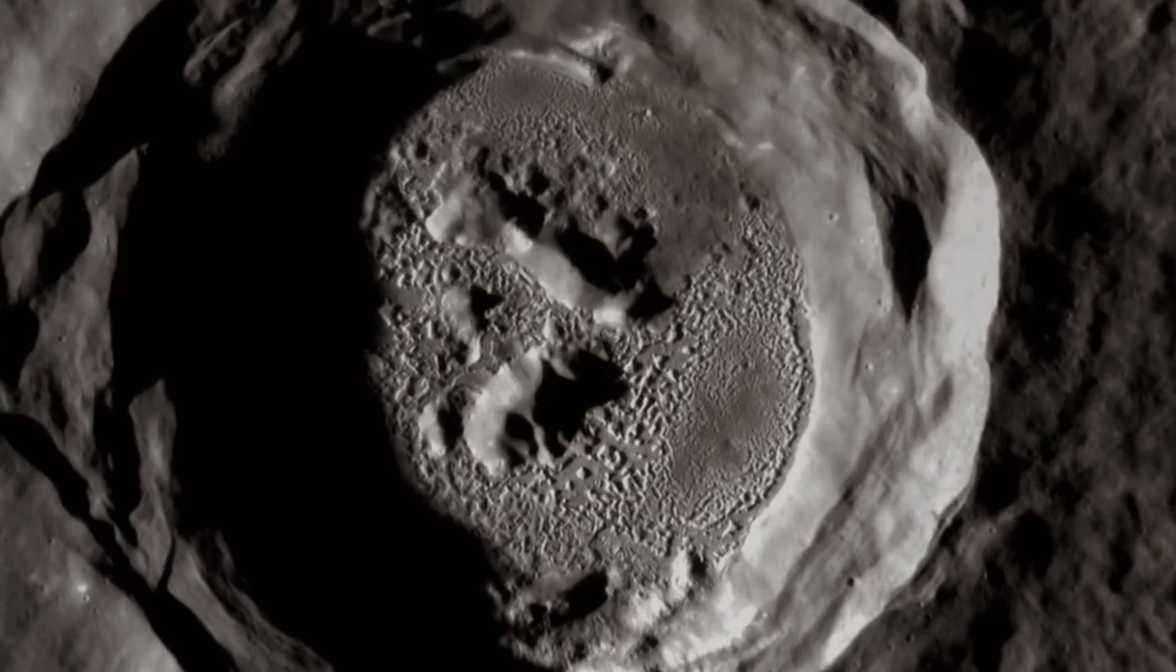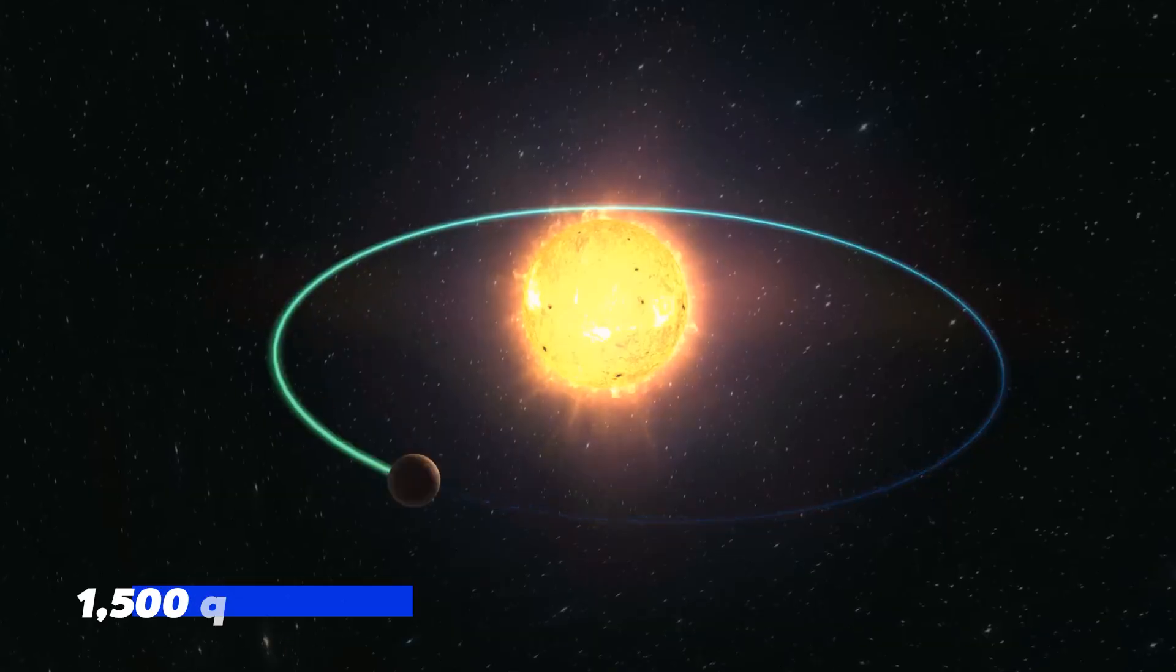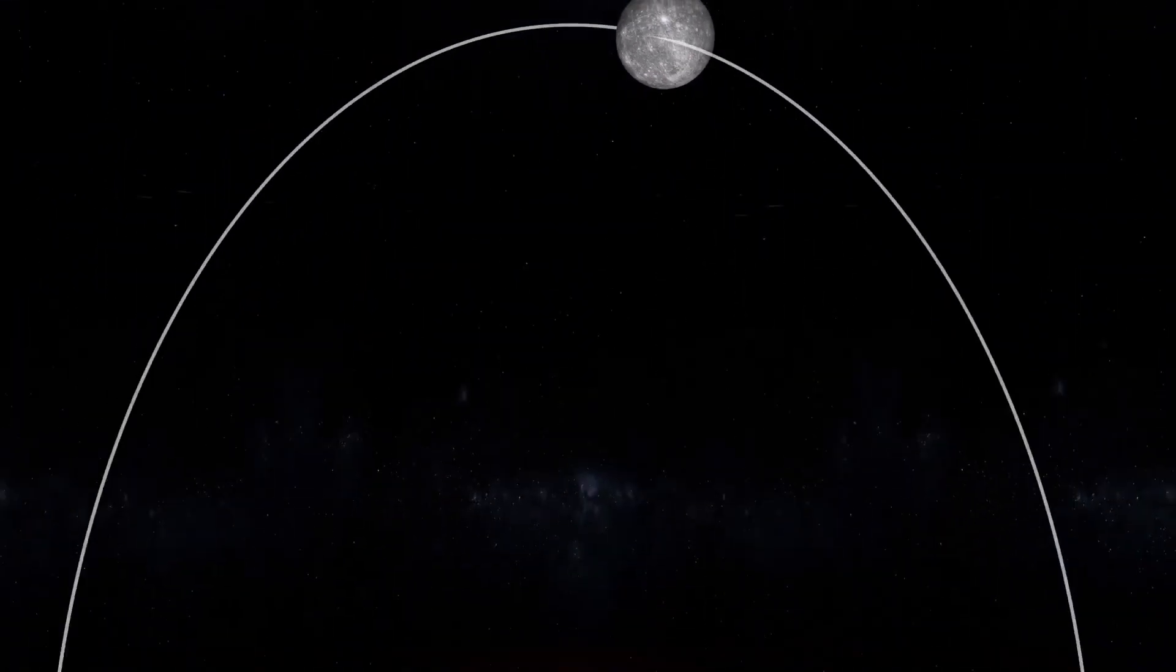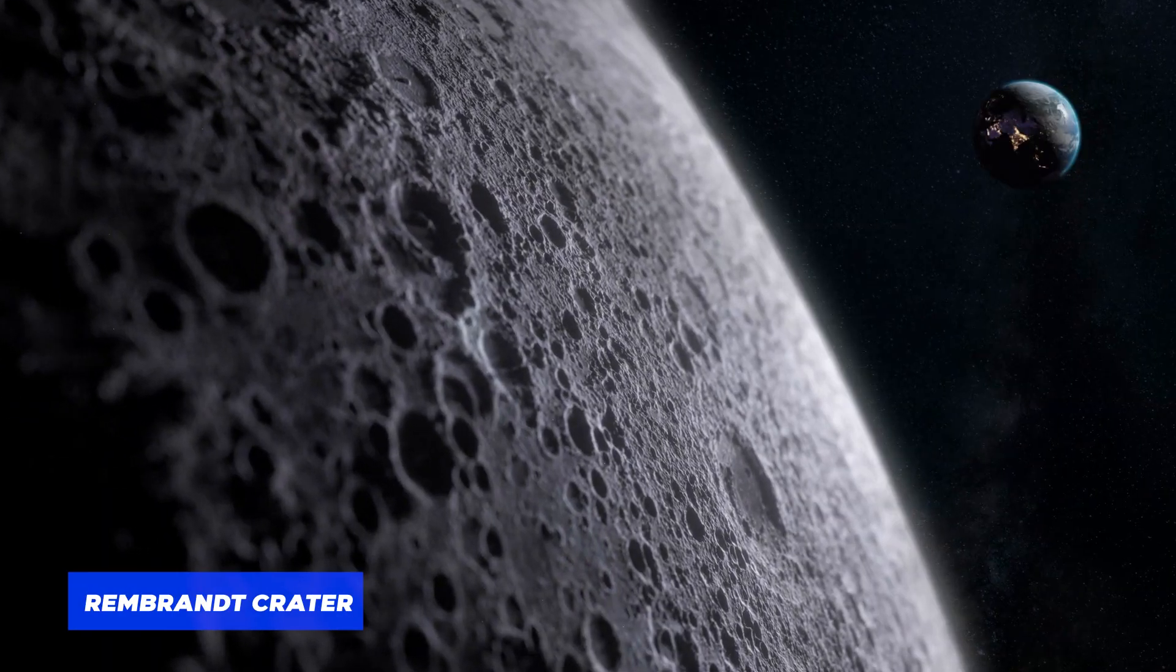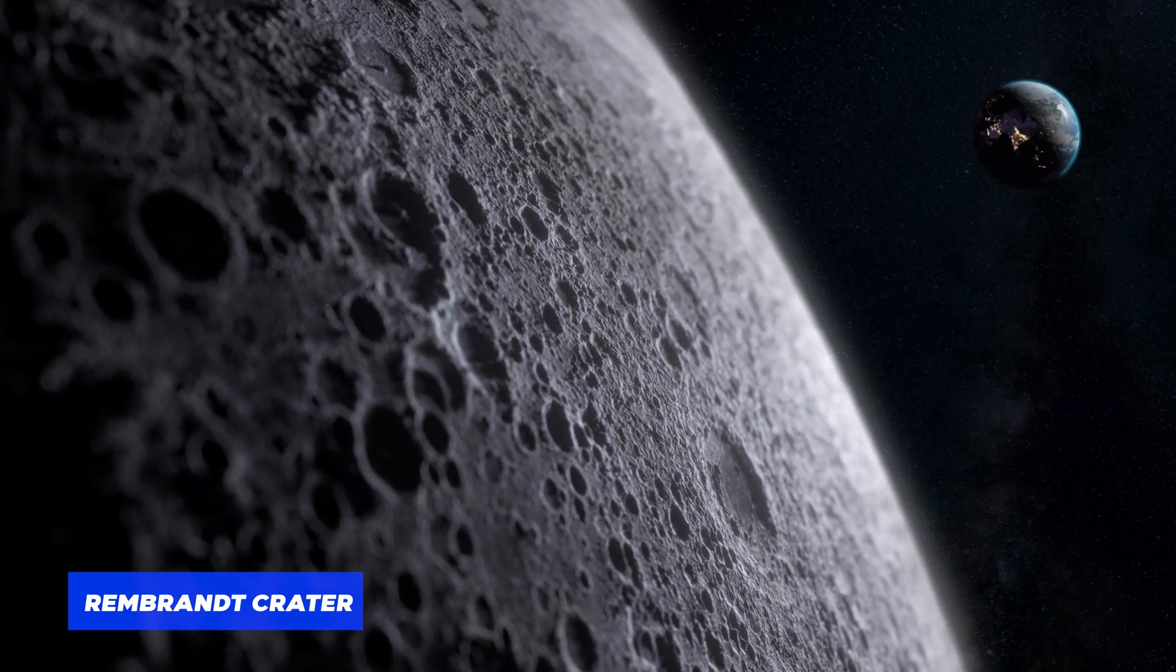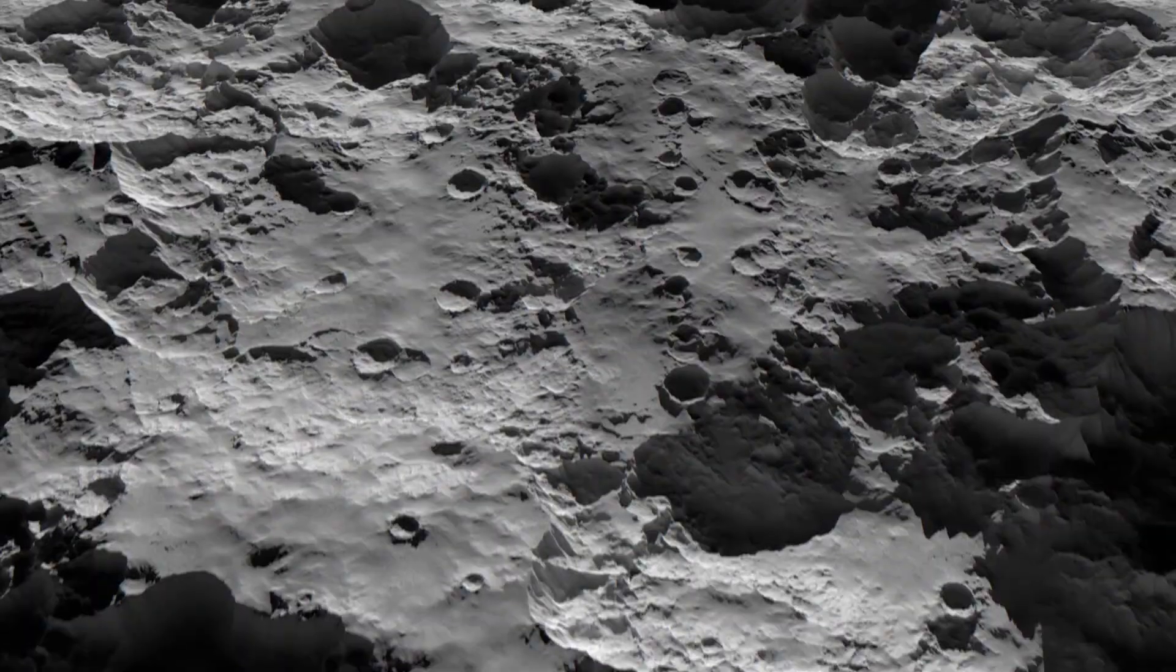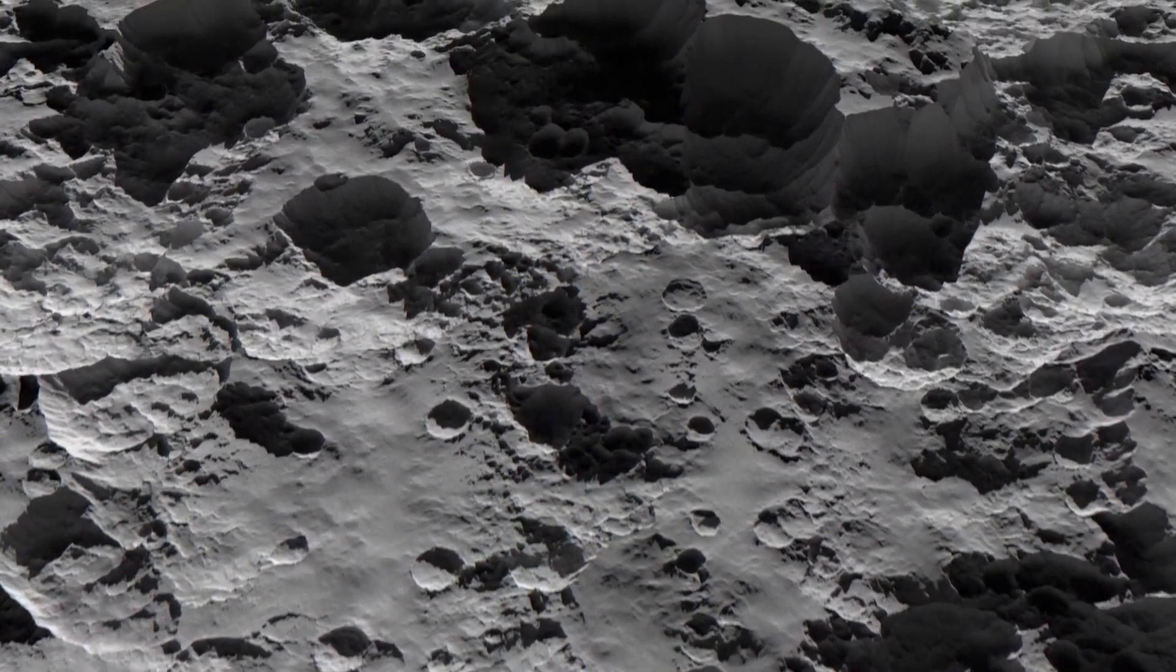Some of the most notable craters on Mercury include the massive Caloris Basin, which spans over 1,500 kilometers in diameter and is surrounded by stunning concentric rings. Another intriguing feature is the Rembrandt Crater, known for its uniquely elongated shape. As we explore the mysteries of Mercury, these craters and surface features continue to reveal secrets about the planet's past and its place in the grand tapestry of our solar system.